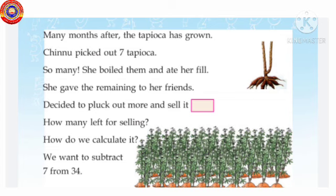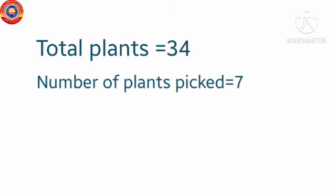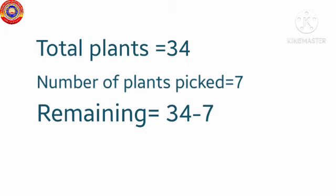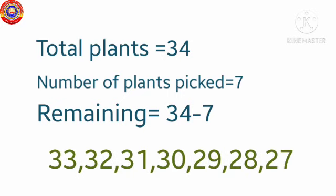Many months after the tapioca has grown, Chinu picked out 7 tapioca. She boiled them and ate her fill. She gave the remaining to her friends. Chinu decided to pluck out more and sell it. How many left for selling? How do we calculate it? Here we want to subtract 7 from 34. Total plants 34, number of plants picked 7. Say before 34, take 7 fingers: 33, 32, 31, 30, 29, 28, 27.